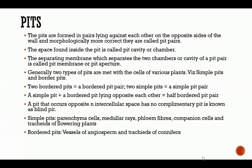We have a structure called the pit, which is where the plasmodesma is found moving through and out of the cell. The pits are found in pairs lying against each other on opposite sides of the wall, and morphologically they are called pit pairs. In one primary wall we have a pit, and in another primary wall we have a pit — both connected together form a pit pair. The space inside the pit is called the pit cavity or chamber, and the membrane separating the two chambers is called the pit membrane or pit aperture.